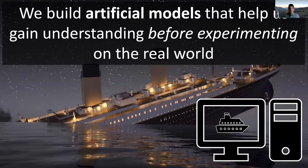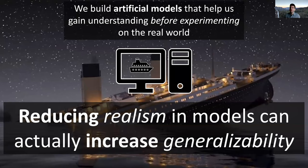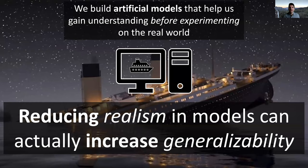We build artificial models like simulation models to gain understanding before experimenting on the real world. The real world is ultimately where we have to act, but we need something of comparable complexity without being too complex. Part of the reason we build simulation models is safety, but also it allows us to trickle in complexity so we don't have to add it all at once. We might find a more general principle applicable to a wider range of systems by adding complexity gradually.